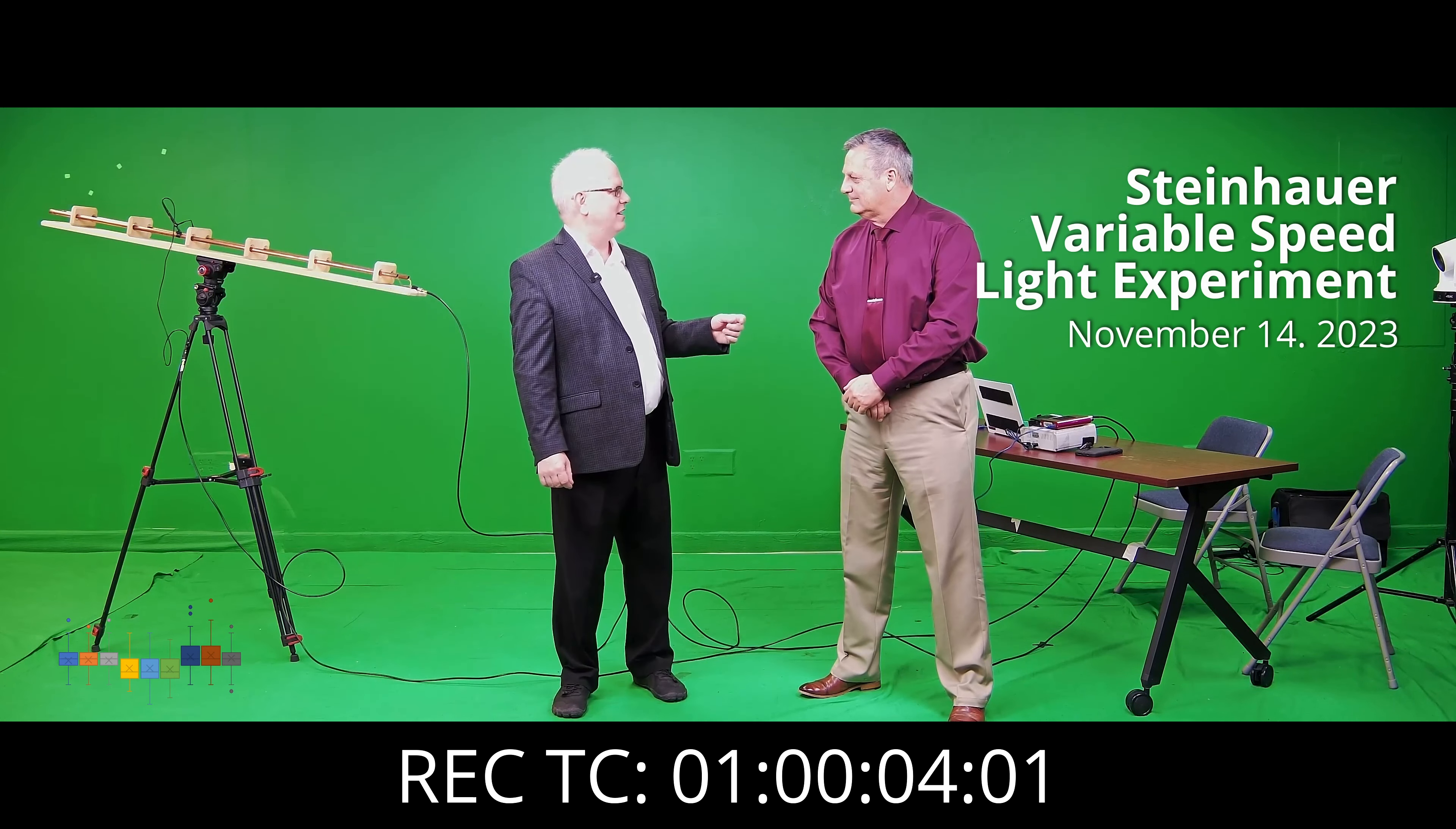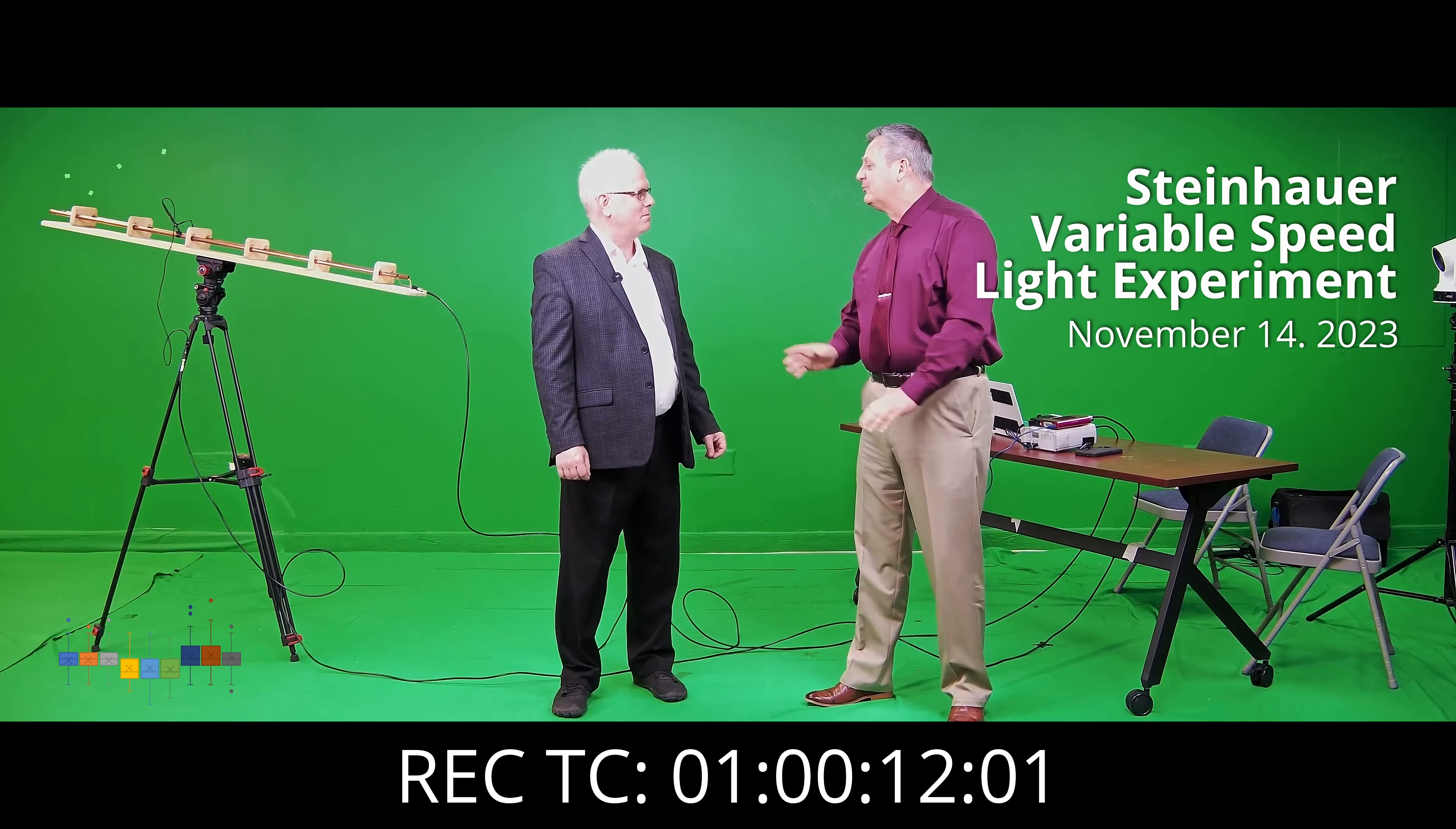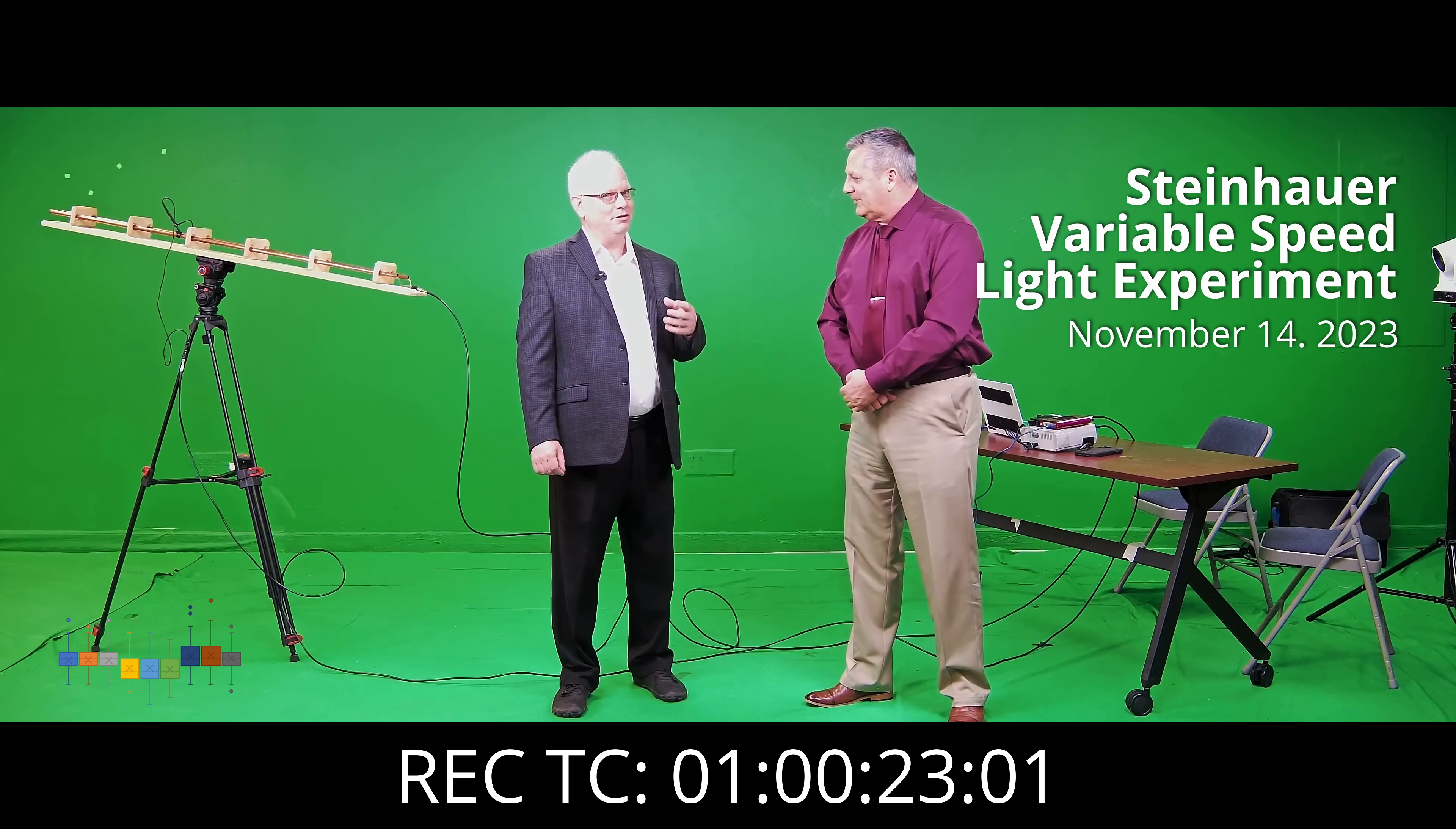Hello, my name is Jeffrey Hill and I am here today with Rene Steinhauer, a research scientist who is going to demonstrate for us his experiment, which is called the Steinhauer Variable Speed Light Experiment. This experiment demonstrates that the speed of light is actually variable and not constant, as is currently widely believed in physics today.